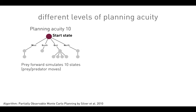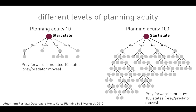What is planning acuity? We're using the POMCP algorithm by Silver. Here's an example of planning acuity 10, grown by the algorithm, where we have some nodes from the start state expanded and some not, for a total of 10 states. With 100 states, it looks like this. We tested planning acuity 1, 10, 100, 1,000, and 5,000.